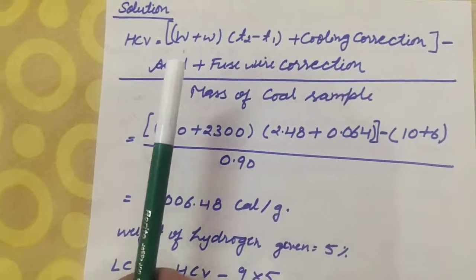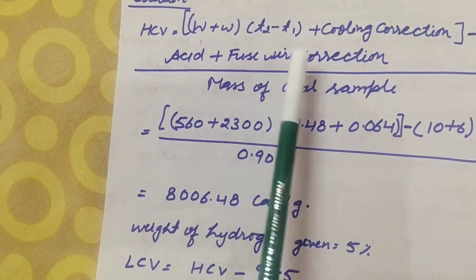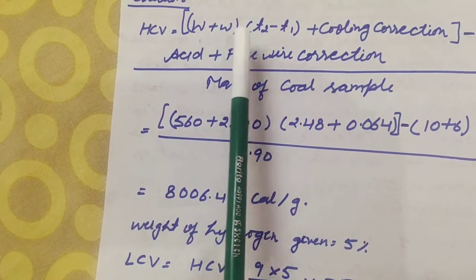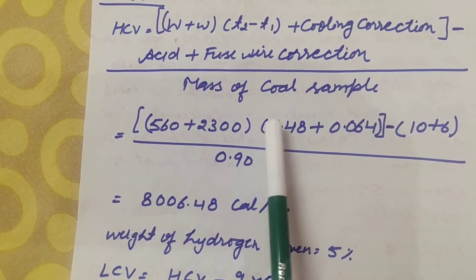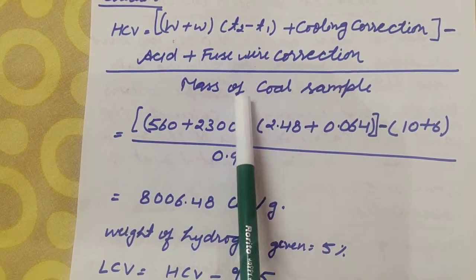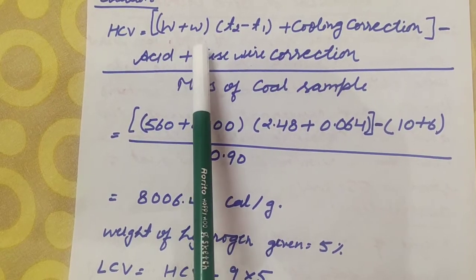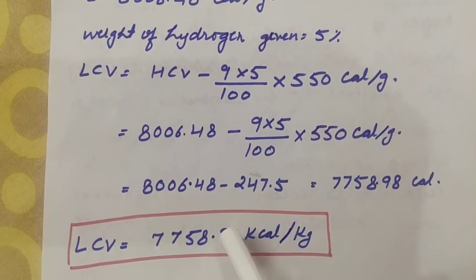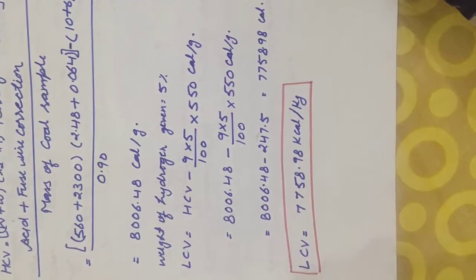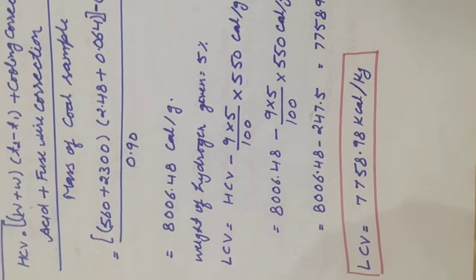Remember that T2 is the final temperature and T1 is the initial temperature; T2 minus T1 gives the rise in temperature, which was taken directly as 2.48 here. Capital W is the weight of water and small w is the water equivalent. I hope it is clear how to solve this numerical. If you have any problems, please comment. Thank you.